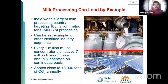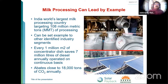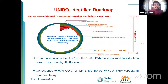Milk processing can lead by example — India is today the world's largest milk processing country, shortly achieving a target of about 108 million metric tons. Every one million square meters of concentrated dish saves about 7 million liters of diesel in good DNI areas, abating about 18,000 tons of CO2 annually. A UNIDO study identifies about 6.45 gigawatt-thermal as the potential — 124 times the current SHIP capacity in operation today.